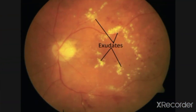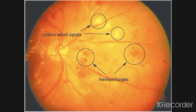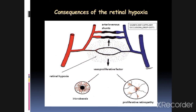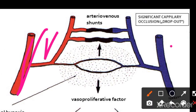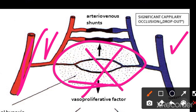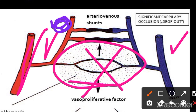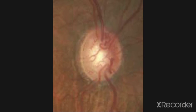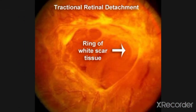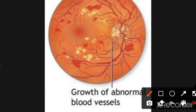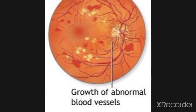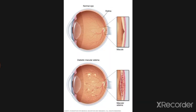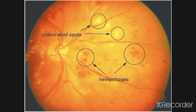Exudates and cotton wool spots can be confused but are different. Exudates and hemorrhages come from leakage. AV shunts occur when capillaries are damaged — blood from arterioles flows directly into venules. This is the leakage summary: edema, exudates, hemorrhages. And the occlusion summary: cotton wool spots, AV shunts, and neovascularization.